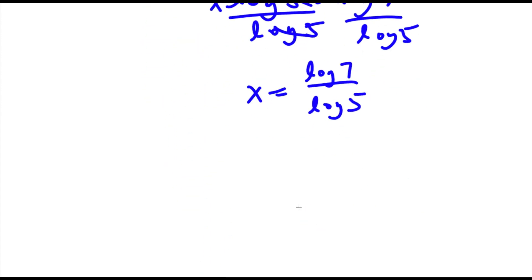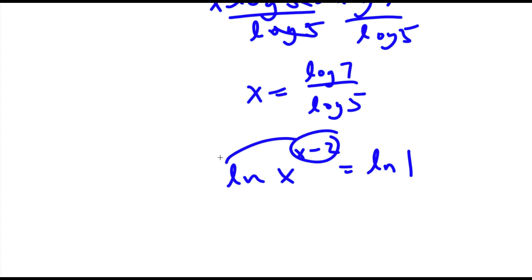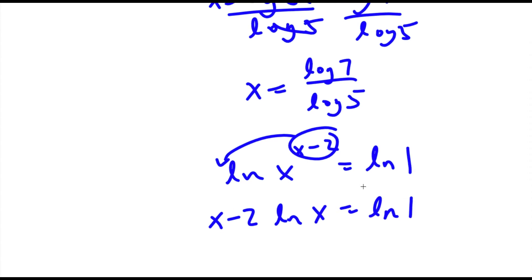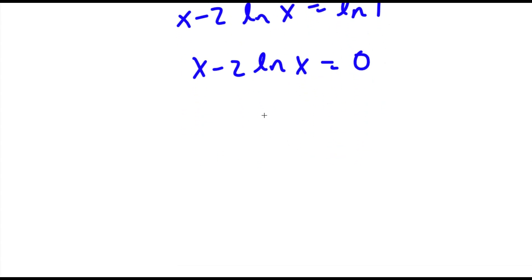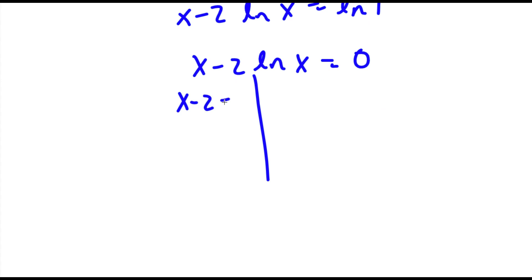Alright, so going back to our problem, we had ln of x to the power of x minus 2 is equal to ln 1. Now I can move this exponent x minus 2 to the front. So I have x minus 2 times ln x is equal to ln 1. Now ln 1 is the same thing as 0, so x minus 2 times ln x equals 0. This gives me two equations: x minus 2 equals 0, and ln x equals 0.